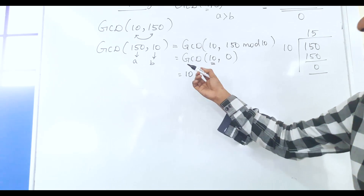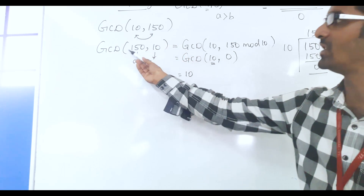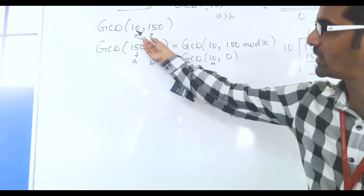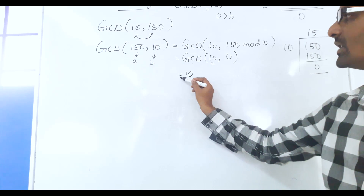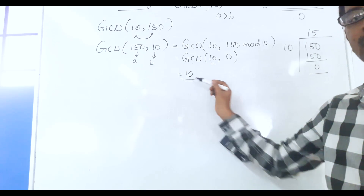So we got the result: GCD of 150, 10 — or equivalently GCD of 10, 150 — is equal to 10.